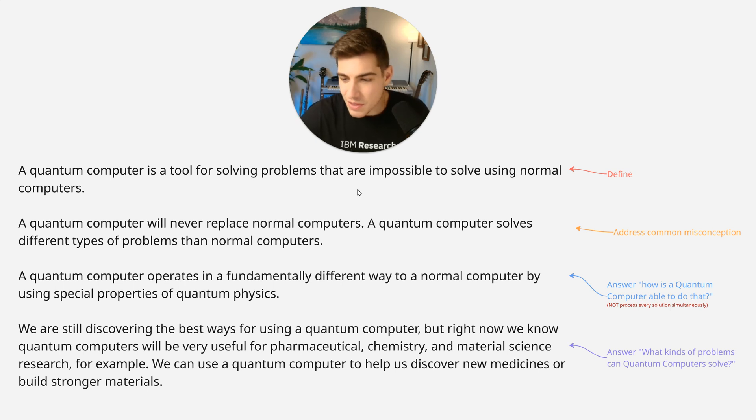And then finally, the next logical question is what does a quantum computer do then? You say, well, we're still discovering the best ways for using a quantum computer today. But right now we know quantum computers will be very useful for pharmaceutical, chemistry, and material science research, for example. We can use a quantum computer to help us discover new medicines or to build stronger materials.